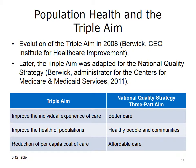In order to achieve population health, there has been an evolution of a concept called the Triple Aim. In 2008, it was introduced by Don Berwick, then CEO of the Institute for Healthcare Improvement. The Triple Aim was later adapted for the National Quality Strategy when Berwick was administrator for the Centers for Medicare and Medicaid Services in 2011. The Triple Aim sought to improve the individual experience of care, improve the health of populations, and reduce the per capita cost of care. The National Quality Strategy aimed to have better care, healthy people and communities, and affordable care.